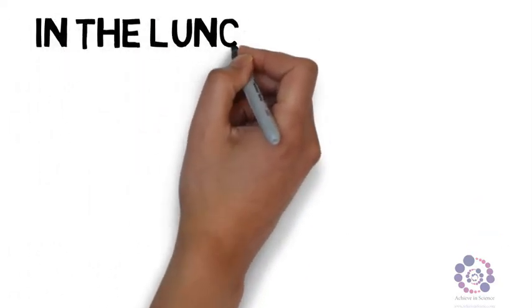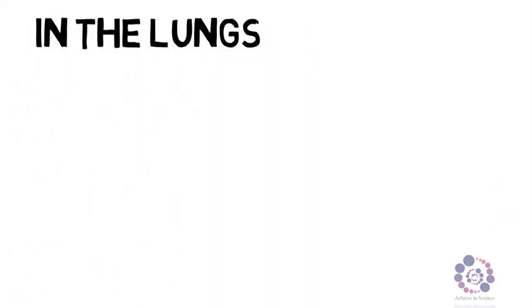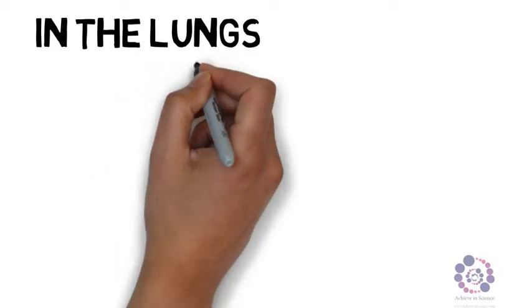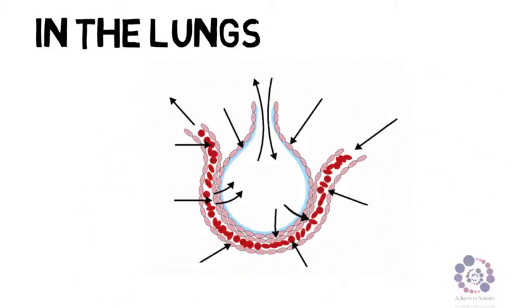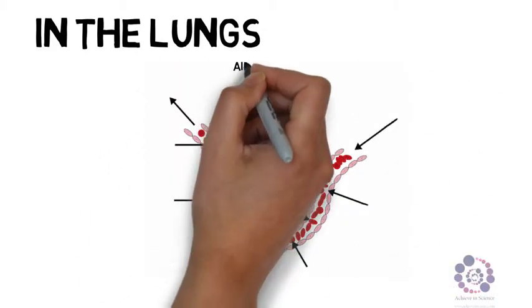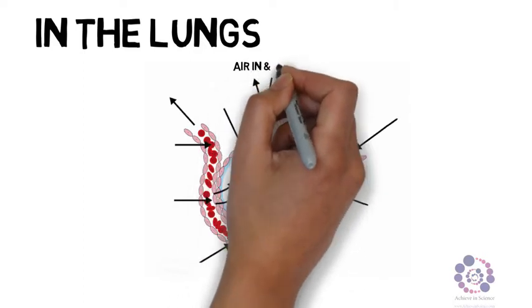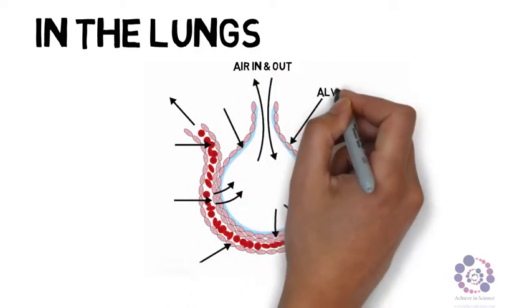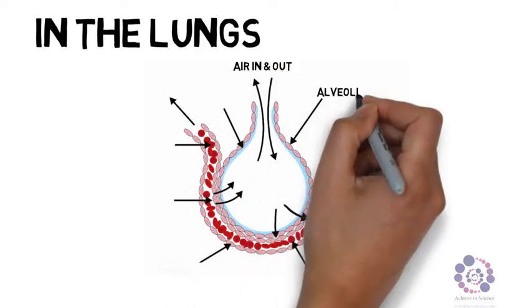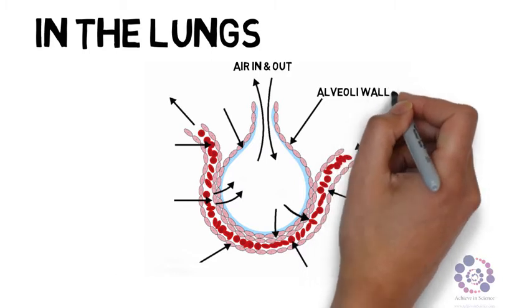Inside the lungs, let's have a look in a little bit more detail. This diagram usually comes up. So the air goes into this air sac first. This is the alveoli wall.